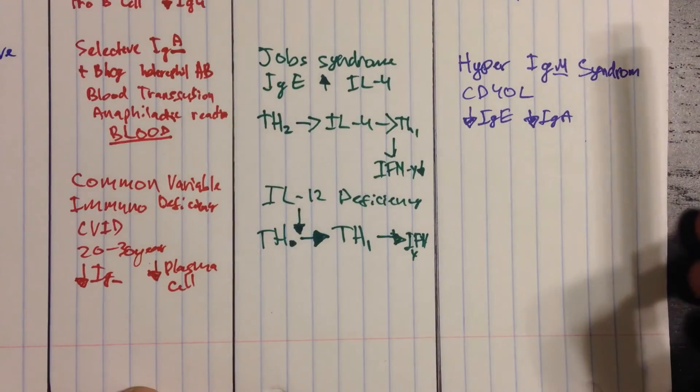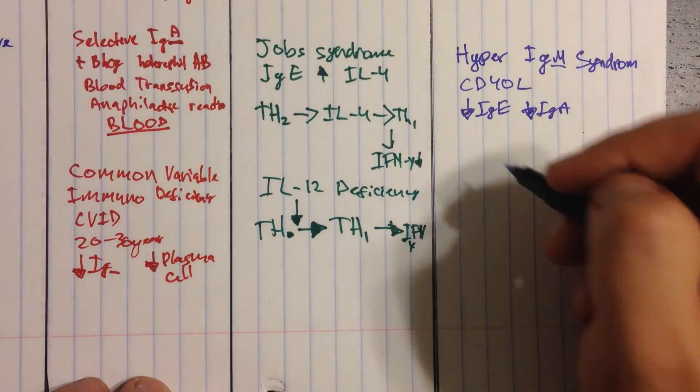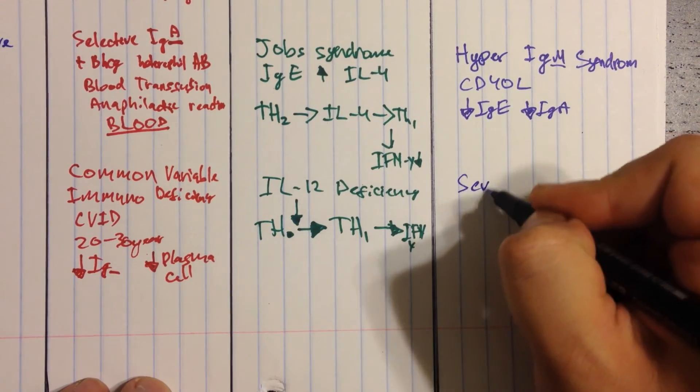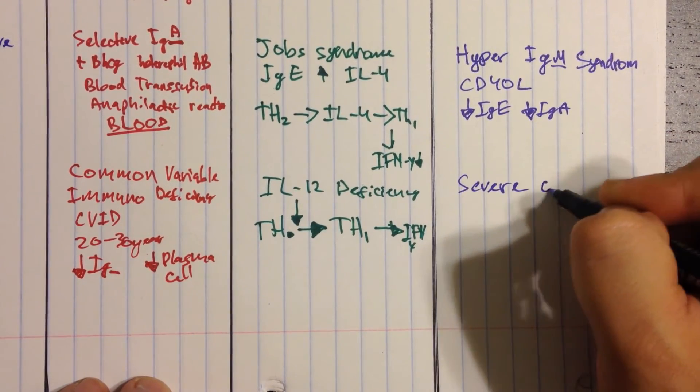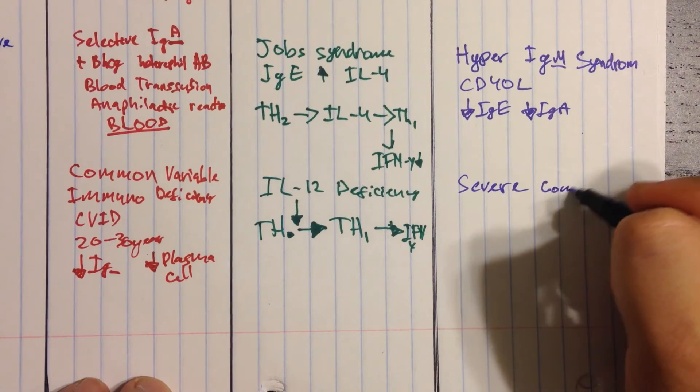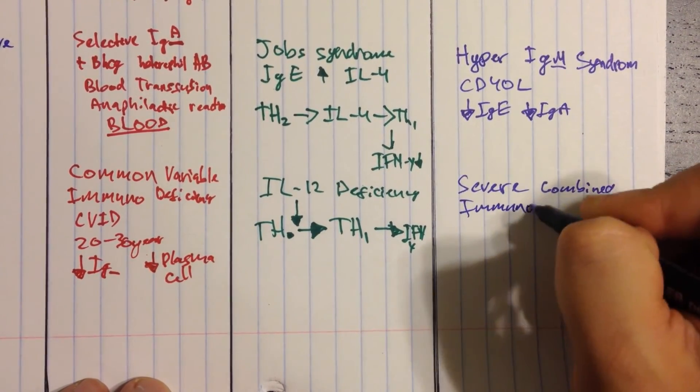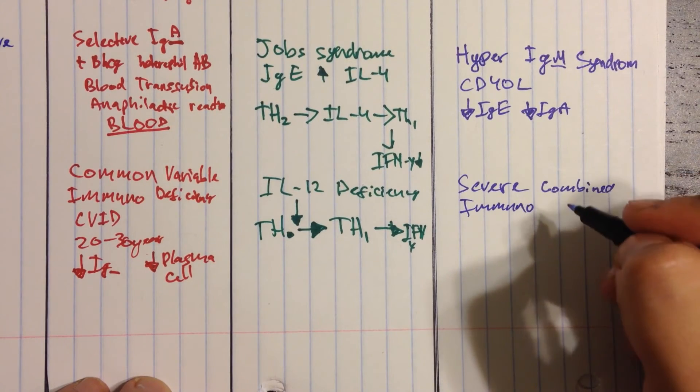Now in the T cells, the disease is very similar to group 1, which is there you have common variable, here you have severe combined. What does that sound like? Severe combined immune deficiency. It sounds severe, it's bad. This is not something you see in adults. This is something you see right away in a child.